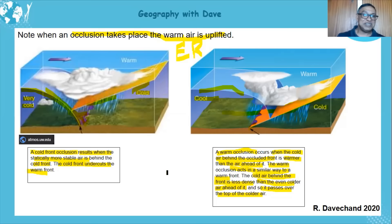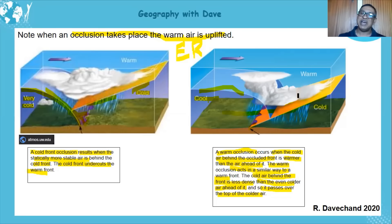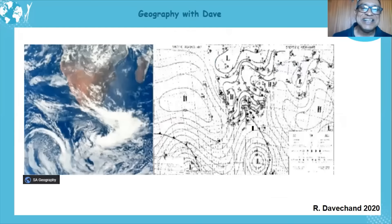To identify: if the cold front is touching the surface, it's a cold front occlusion. If the warm front is touching the surface, it's a warm front occlusion. The air behind the cold front occlusion is colder and undercuts, lifting the warm air in front. The air behind the warm front occlusion is cooler and overrides the cold air ahead.